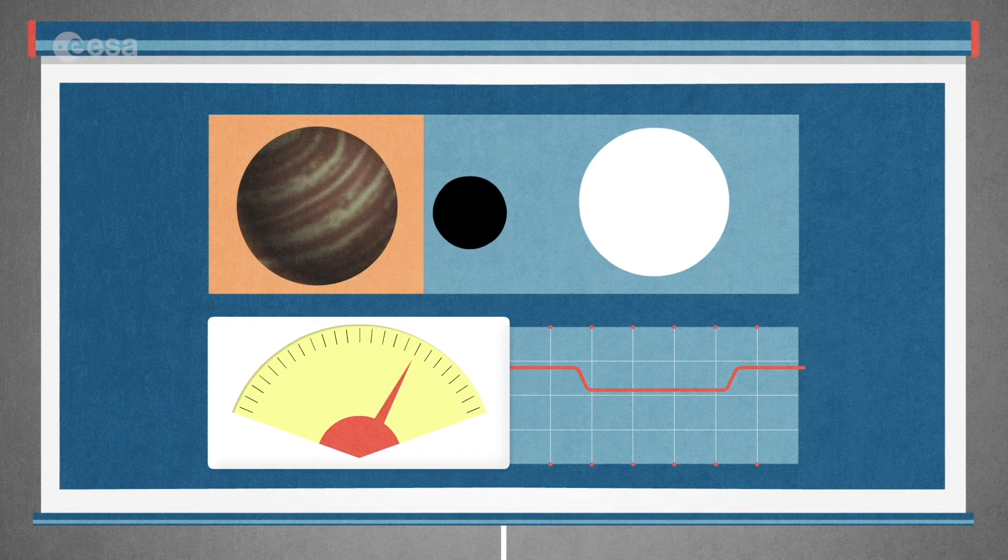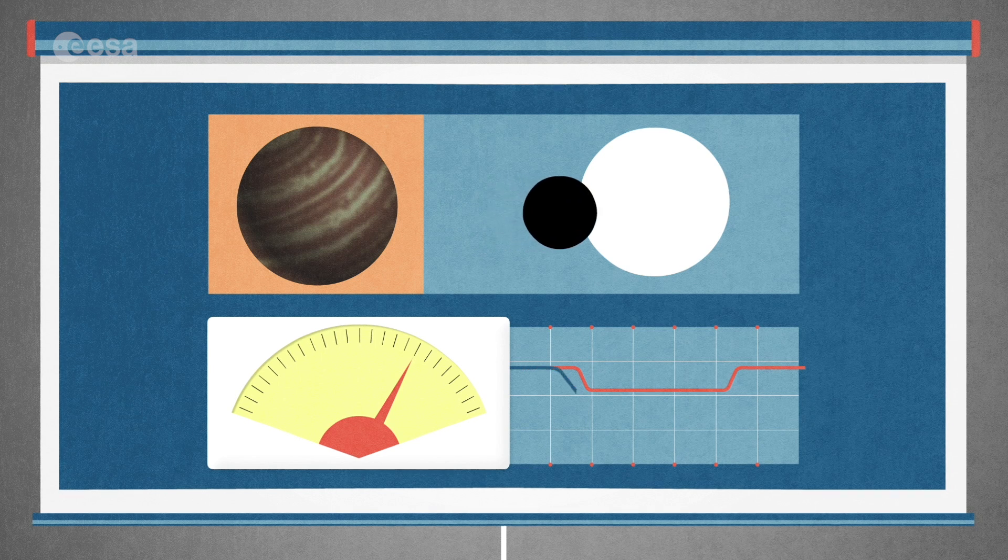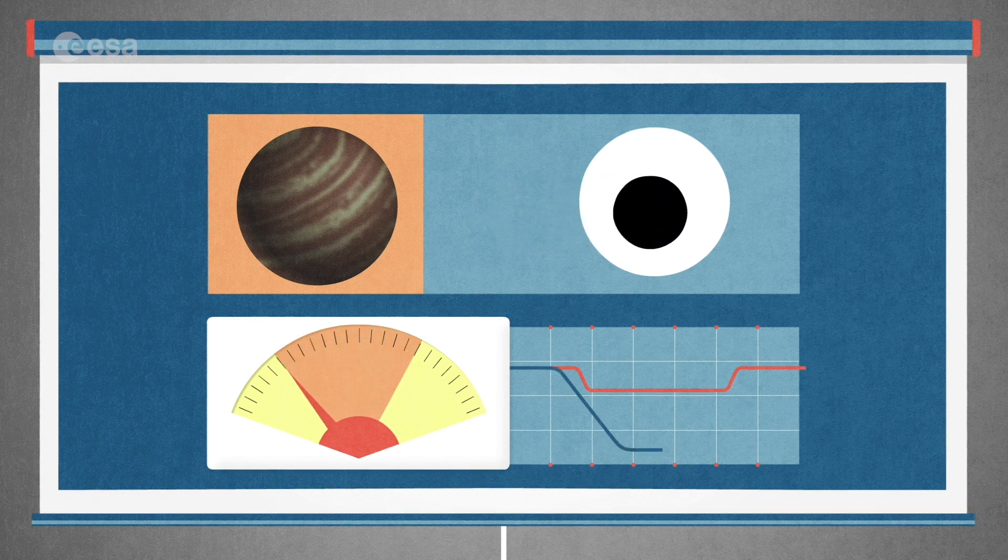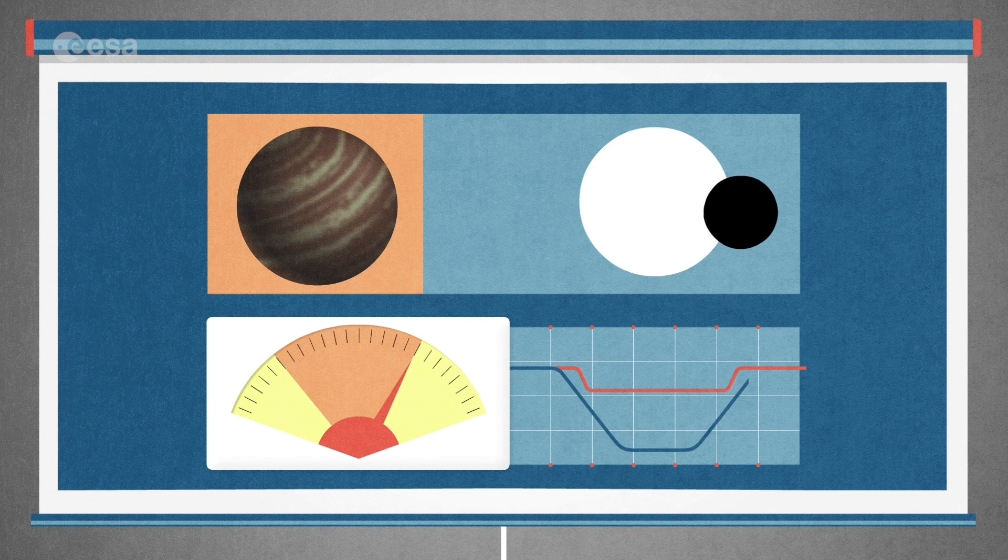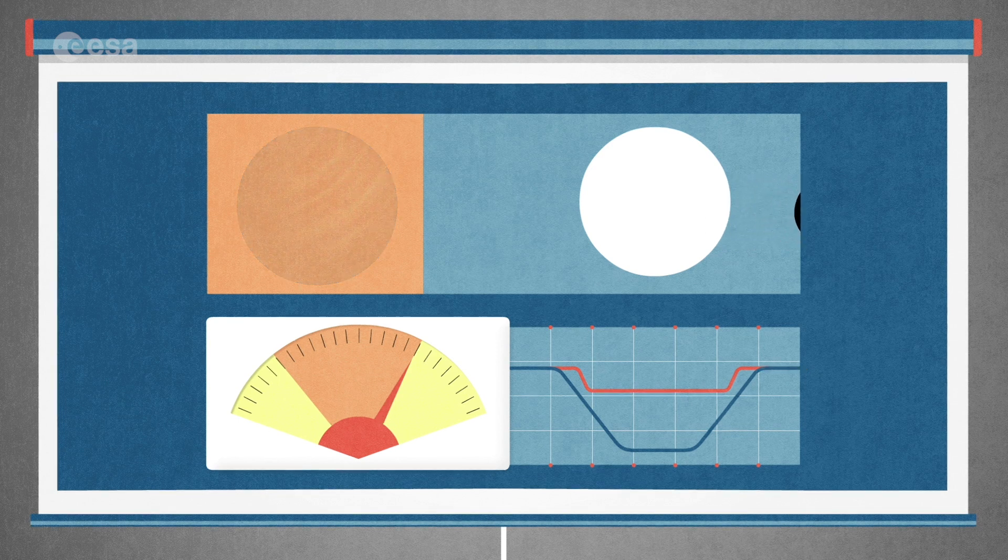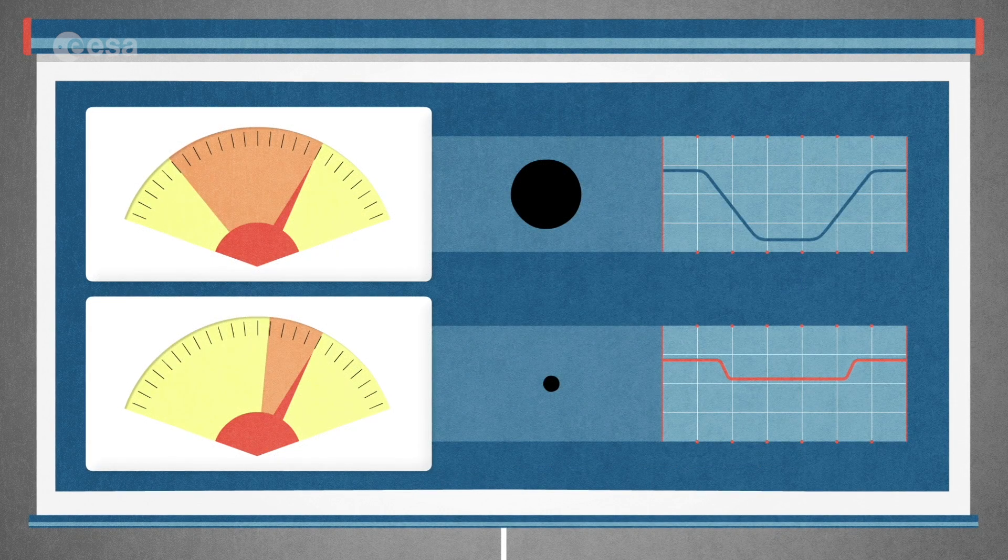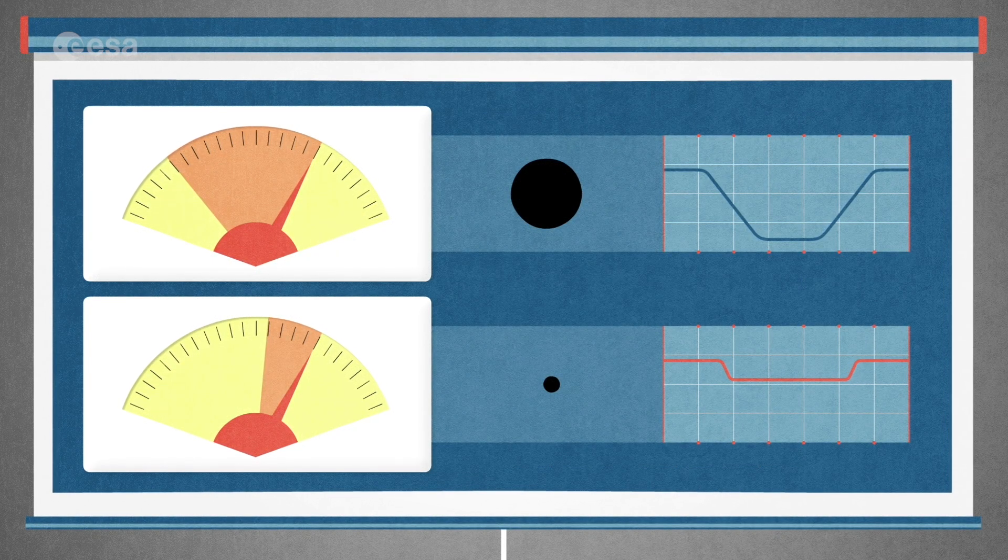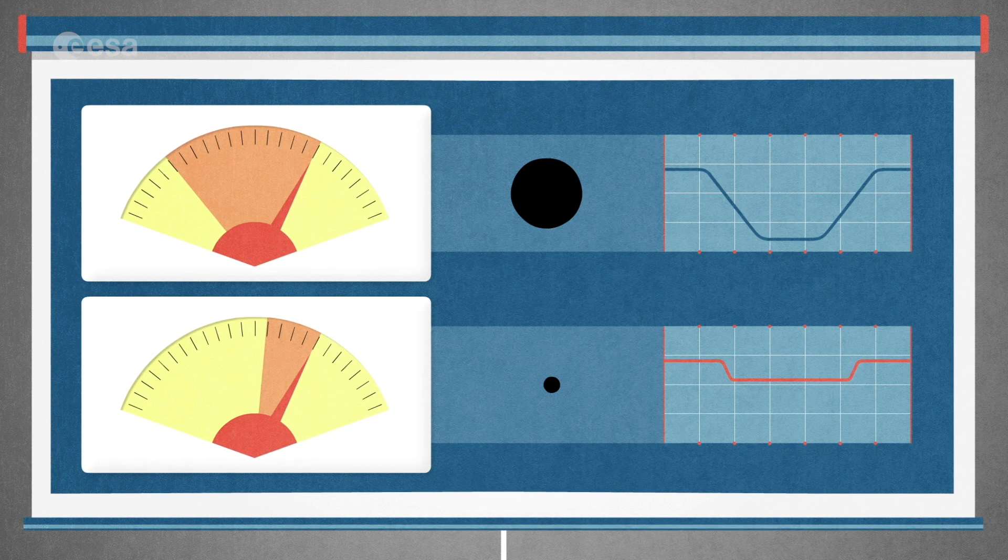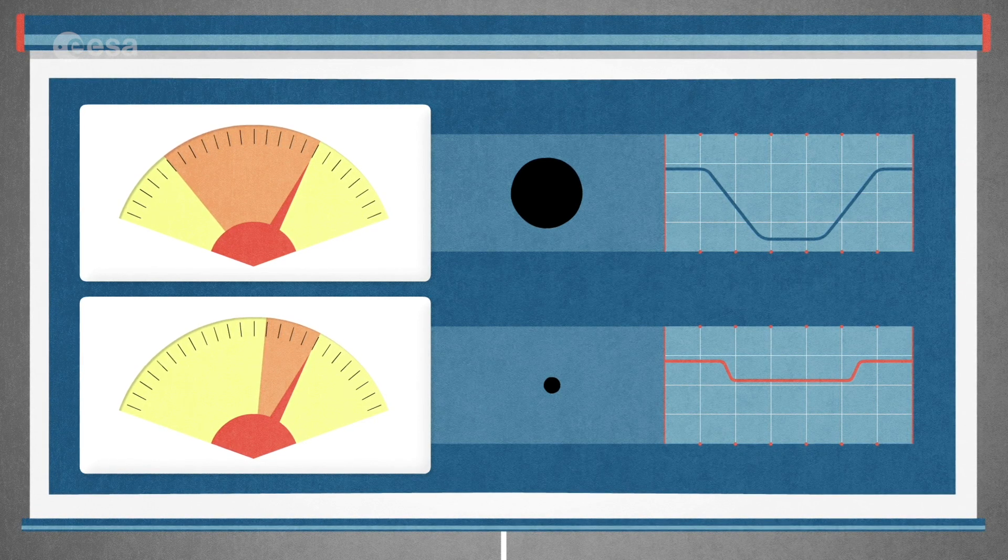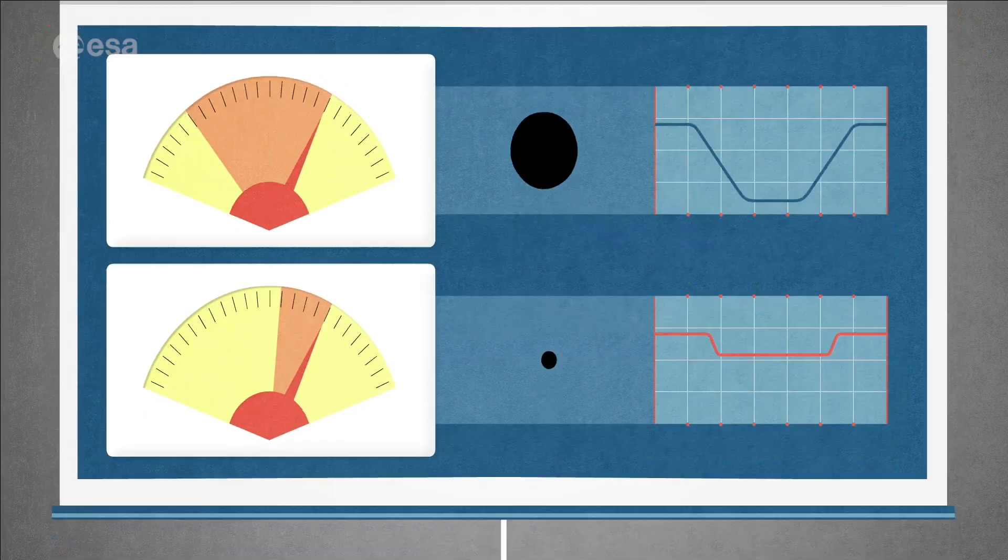And how much dimmer it gets depends on the size of the planet relative to the star. Planets come in a lot of different sizes, and the bigger planets block more of the light that reaches us, and smaller planets less. These are tiny changes, but measuring them with CHEOPS allows astronomers to figure out exactly the size, the radius, of a planet.